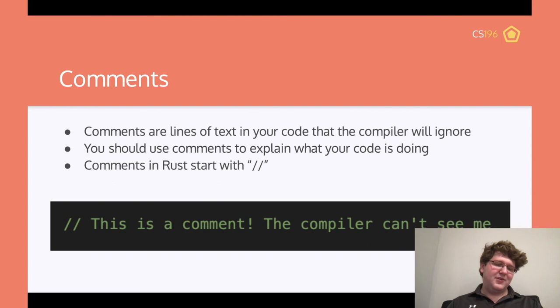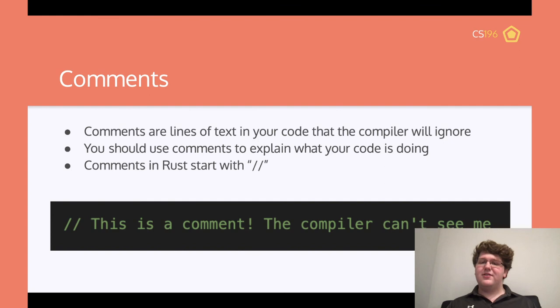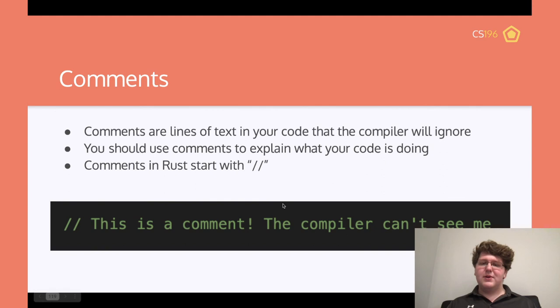Comments are lines of text in your code that the compiler will ignore, just like in other languages. Unlike Python, comments in Rust start with //. That's all the slides for today — we have poll questions remaining and then we're done.